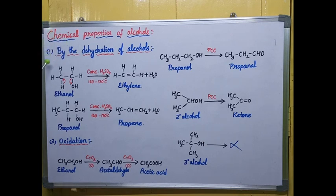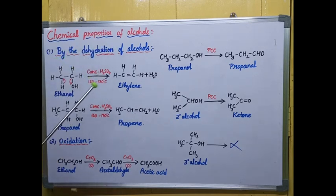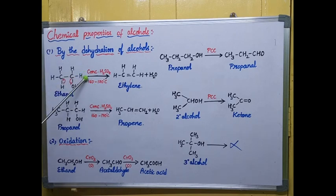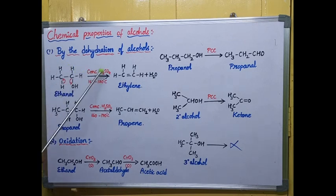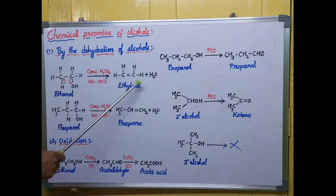The first reaction is the dehydration of alcohols. By dehydration of alcohols, we can produce alkenes. This dehydration takes place in the presence of concentrated sulfuric acid at 160 to 170 degrees centigrade. Here, sulfuric acid is acting as a dehydrating agent. Dehydration is nothing but the removal of a water molecule.